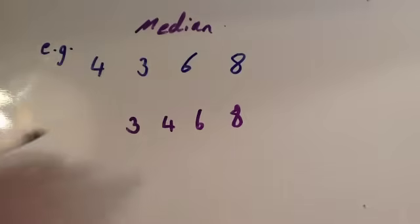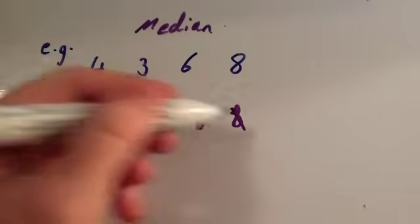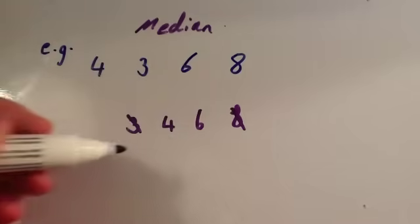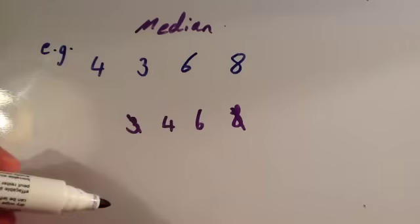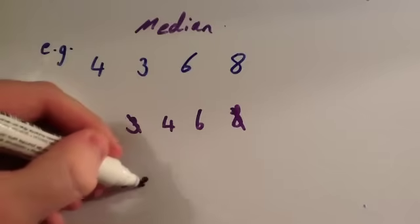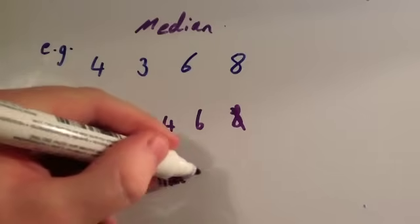Then we've got to locate the middle number. Cross off the smallest and cross off the biggest. It leaves us with 4 and 6 in the middle. To find the middle of these two numbers, in between 4 and 6 would be 5. So the median equals 5.